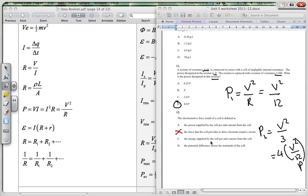C, the energy supplied by the cell per unit current. Now it's per unit charge, so it's not that.